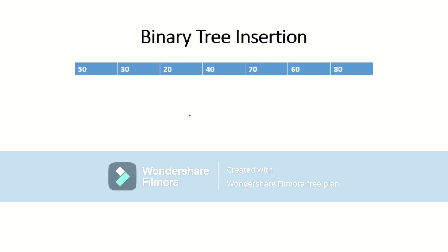Suppose this is the sequence of numbers you want to insert into a binary tree. We have to take the first number — the first number will form the root of the tree. Now we take the second number. The second number is less than the root, so you have to insert the second number in the left subtree.